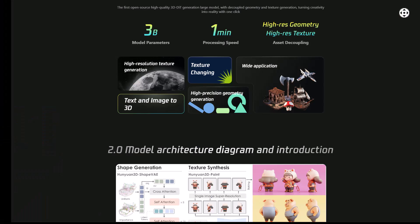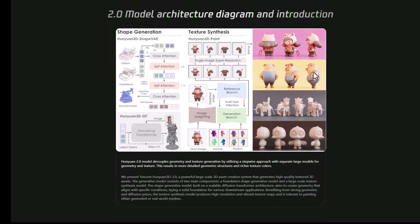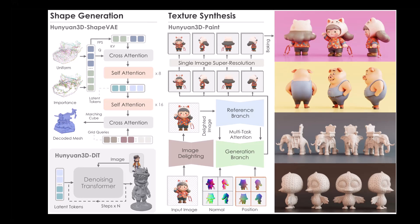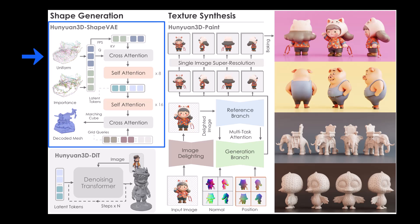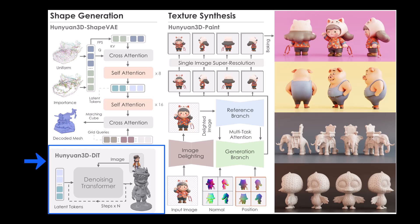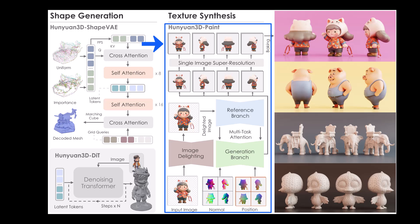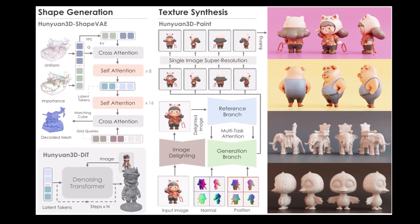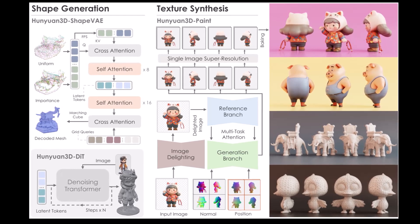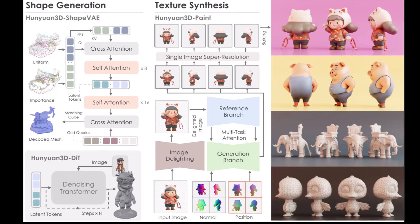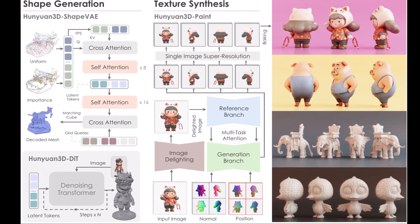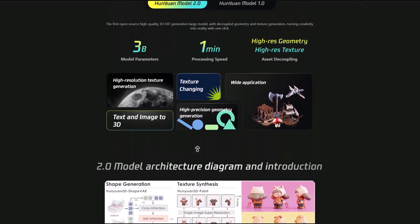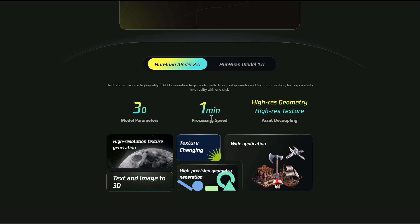For those who want to see how this works, you can go to the link in the description. This tool currently has two foundational components: a large-scale shape generation model called the Hunyuan 3D Shape VAE and the Hunyuan 3D DIT, and a large-scale texture synthesis model called Hunyuan 3D Paint. The shape generation model is built on a scalable flow-based diffusion transformer that creates geometry aligned with the given image condition. Compared to version 1, version 2 uses 3 billion model parameters, about 1 minute of processing time, and can generate high-resolution geometry alongside high-resolution textures.